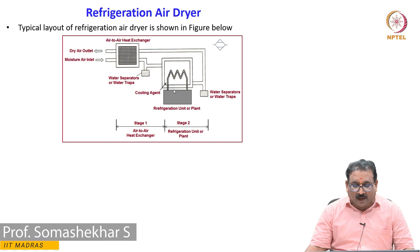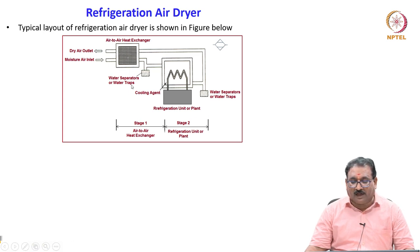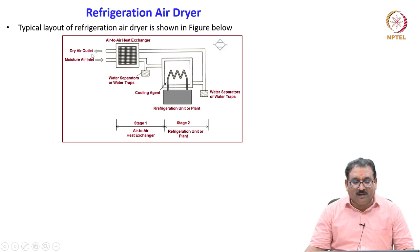This contaminant is collected in the water separator or water traps provided at different locations. Then the dry air is taken out from here.